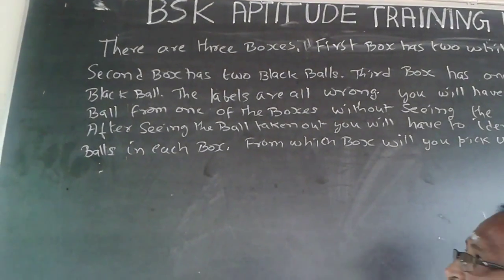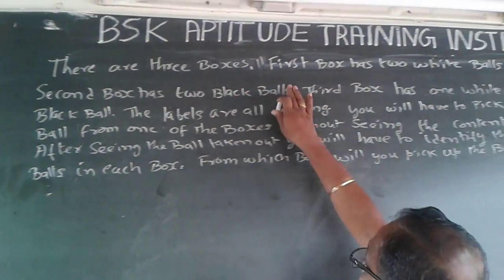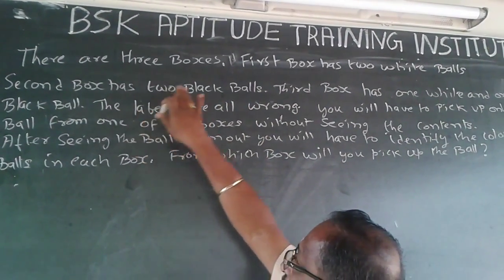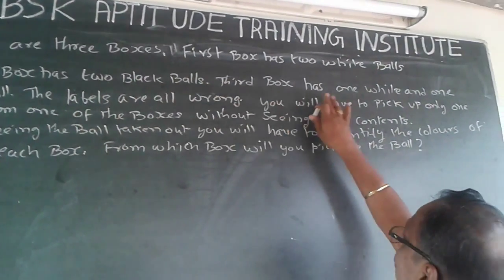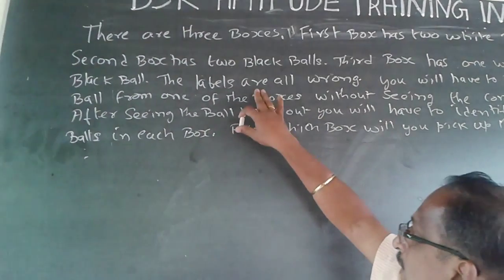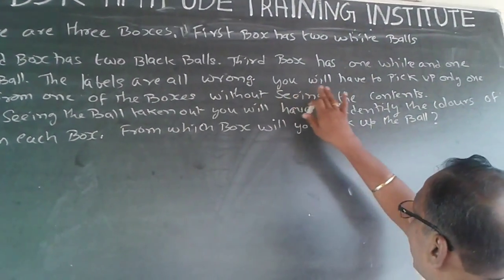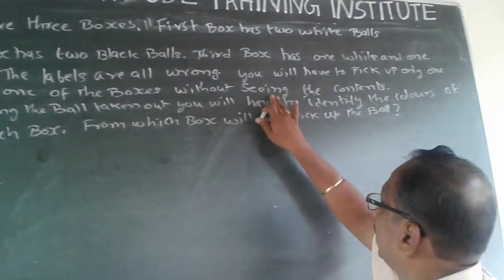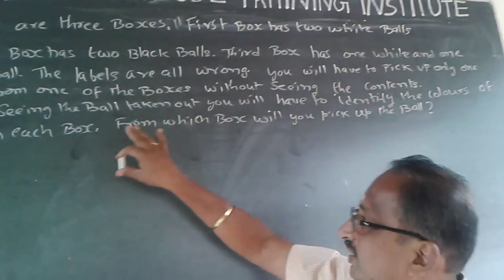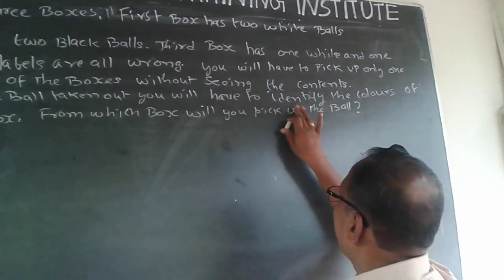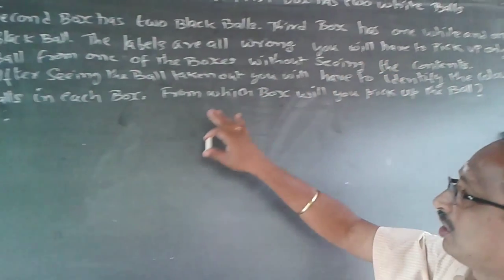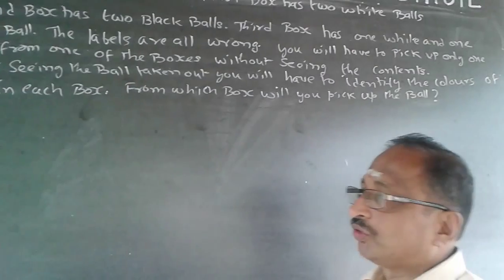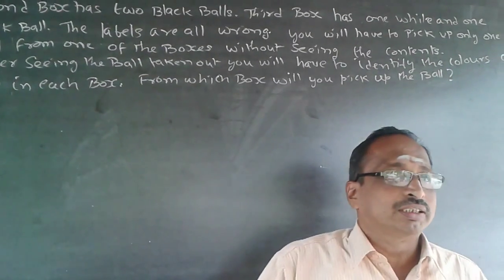The question I'm going to handle now is: there are three boxes. The first box has two white balls, the second box has two black balls, the third box has one white and one black ball. The labels are all wrong. You will have to pick up only one ball from one of the boxes without seeing the contents. After seeing the ball taken out, you will have to identify the colors of balls in each box. From which box will you pick up the ball?